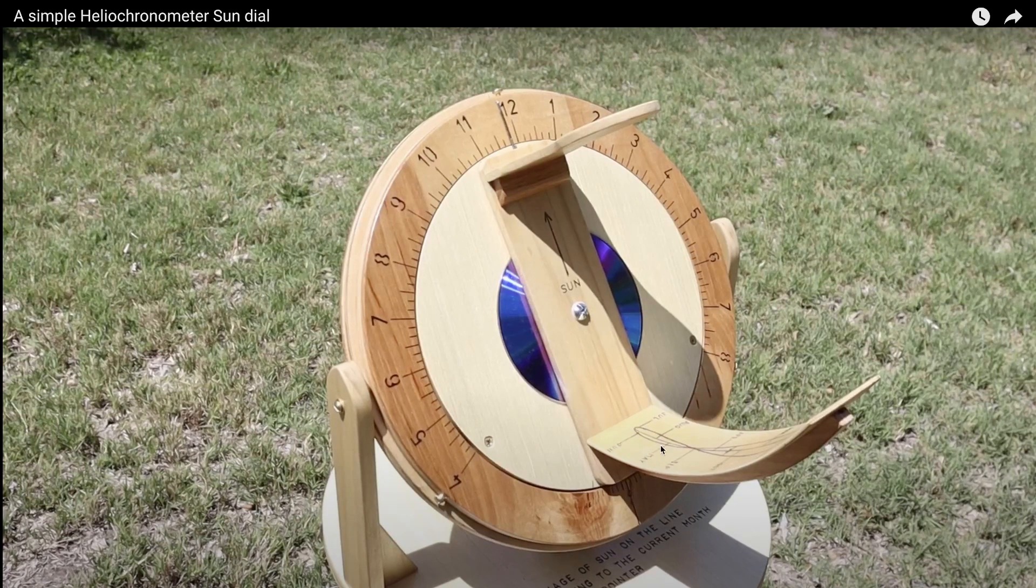The interesting thing about this heliochronometer is that it is literally accurate to about one minute. Yet this arm is probably eight or ten inches long. So despite a rather short radius for the sun, he's getting one minute of accuracy out of this, maybe two. I think that I can do a little bit better.